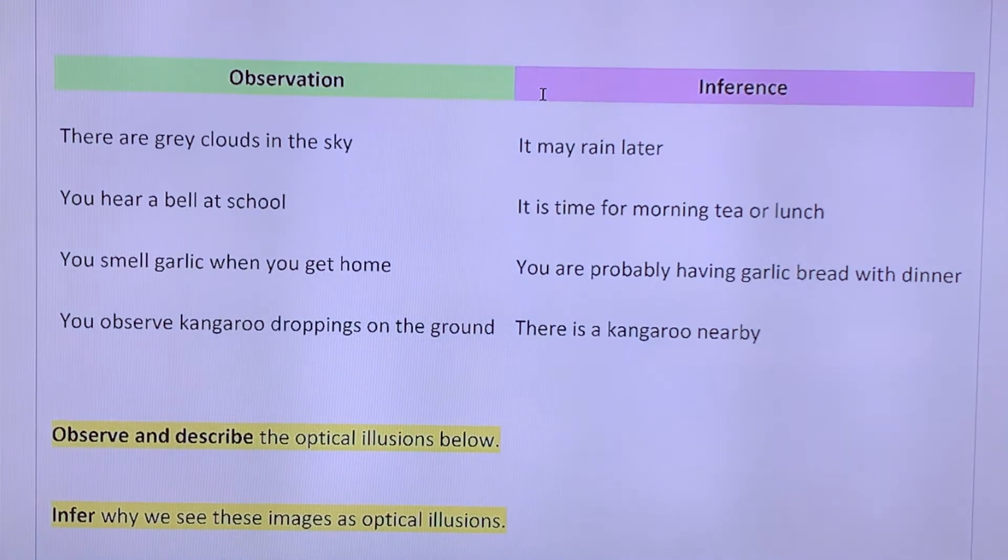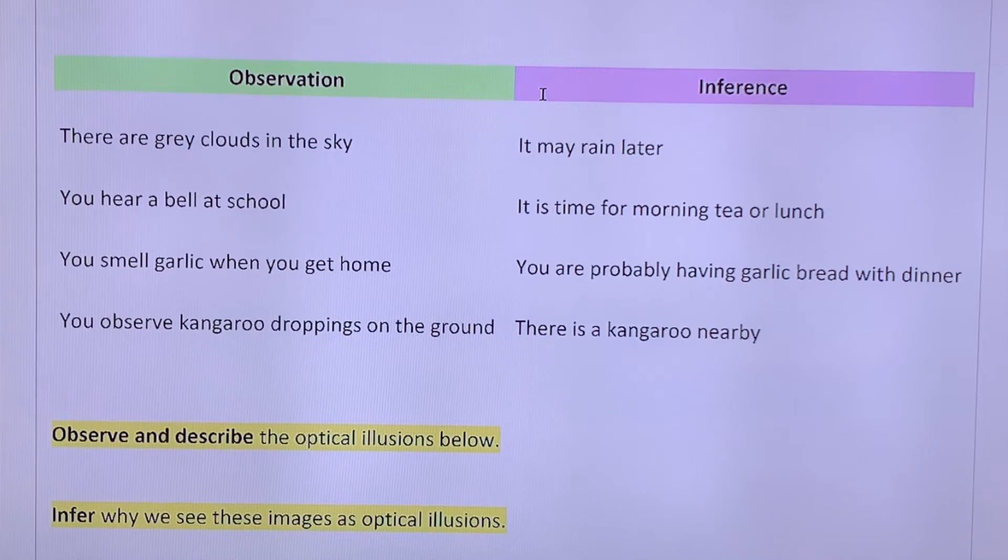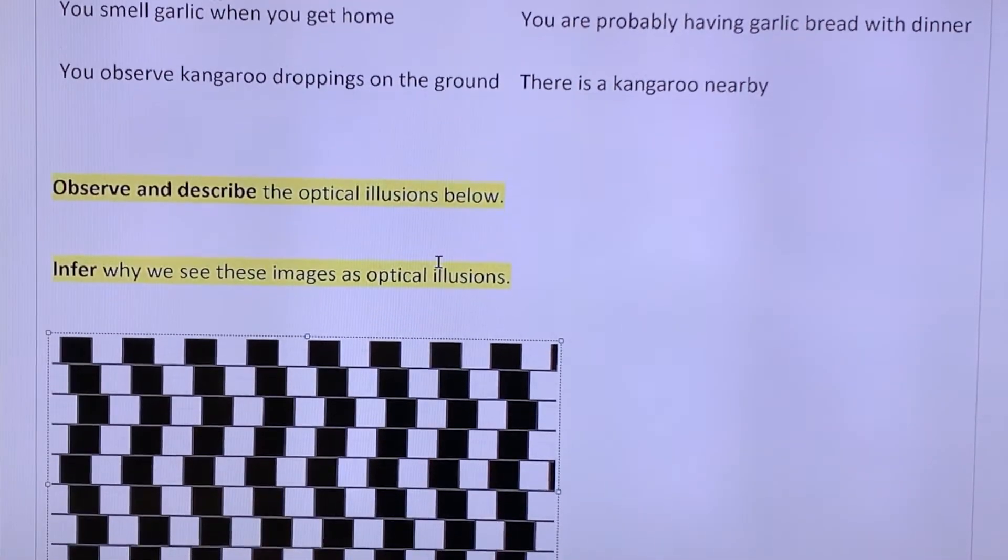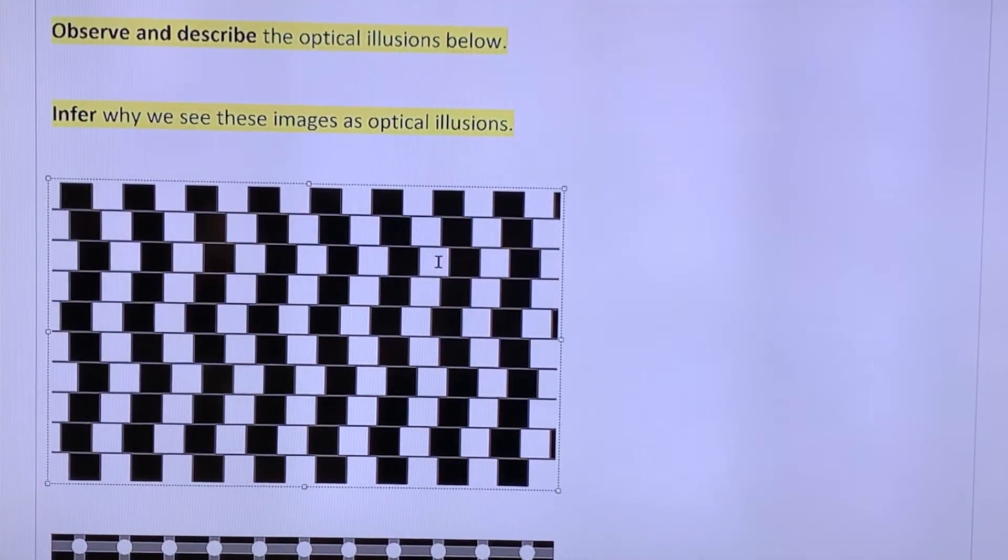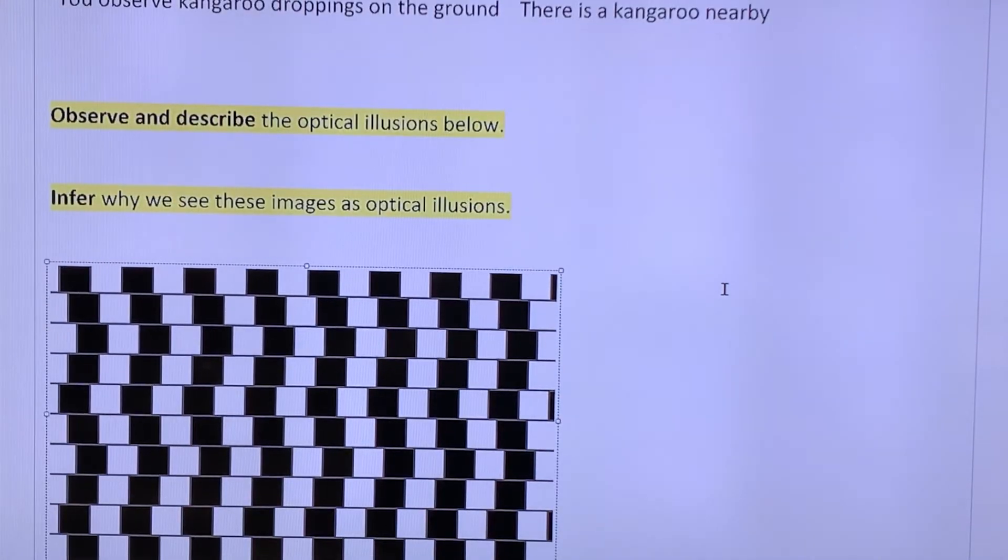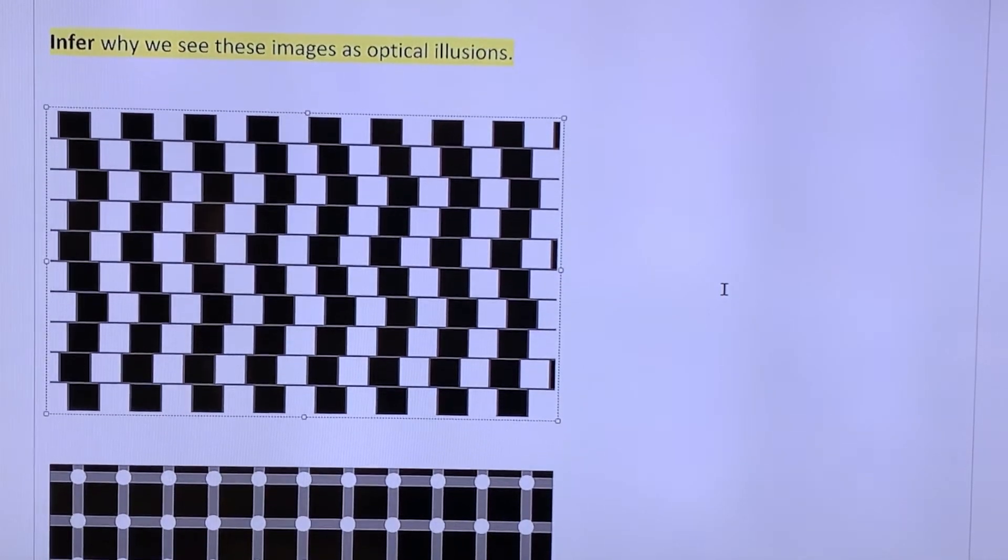Same with kangaroos again. Observe kangaroo droppings on the ground. You can infer that there's kangaroos nearby or that they have been. Now, there's a little activity here. I want you to really think about these. So observe and describe the optical illusions below. So infer why we see these images as optical illusions.